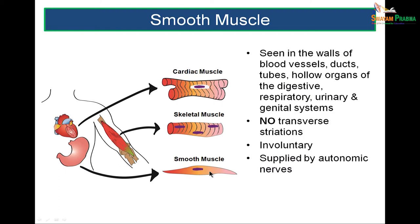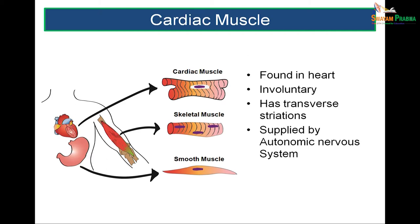Smooth muscle is made of fusiform fibers present in the walls of ducts, blood vessels, genital, cardiovascular, digestive, and urinary genital systems. There are no transversations and it is supplied by the autonomic nervous system. Cardiac muscle is present in the heart; it is also striated but branched, having intercalated discs, and is involuntary, totally under the autonomic nervous system.